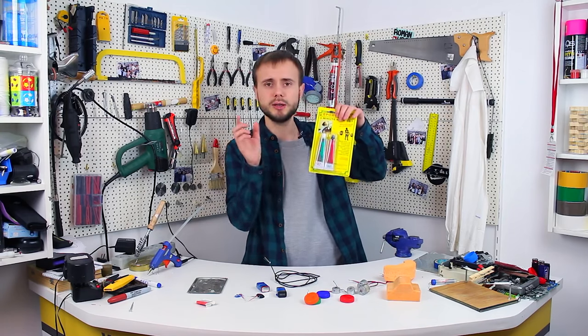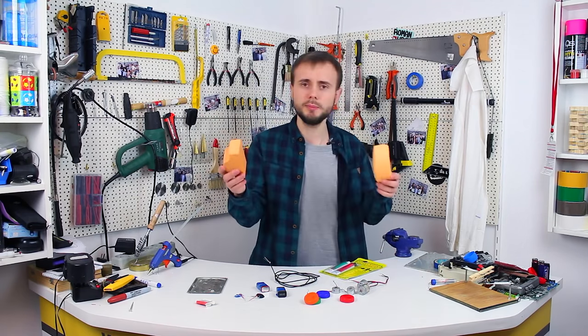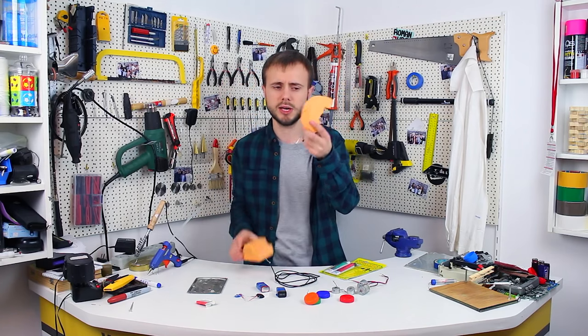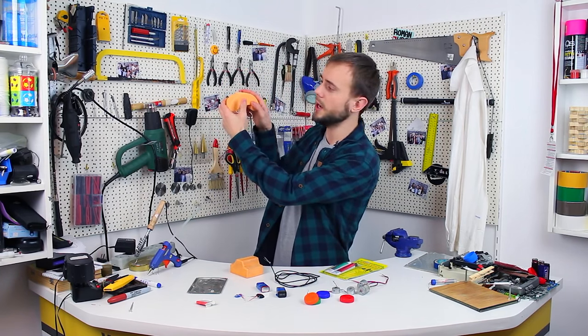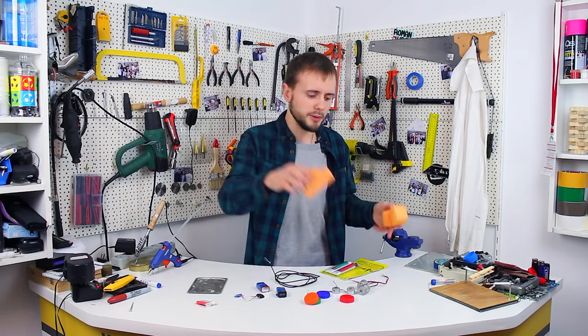To make our car we will need some epoxy and two pieces of solid styrofoam. I've made this in advance. This one will be our remote control and this will be the car's body.